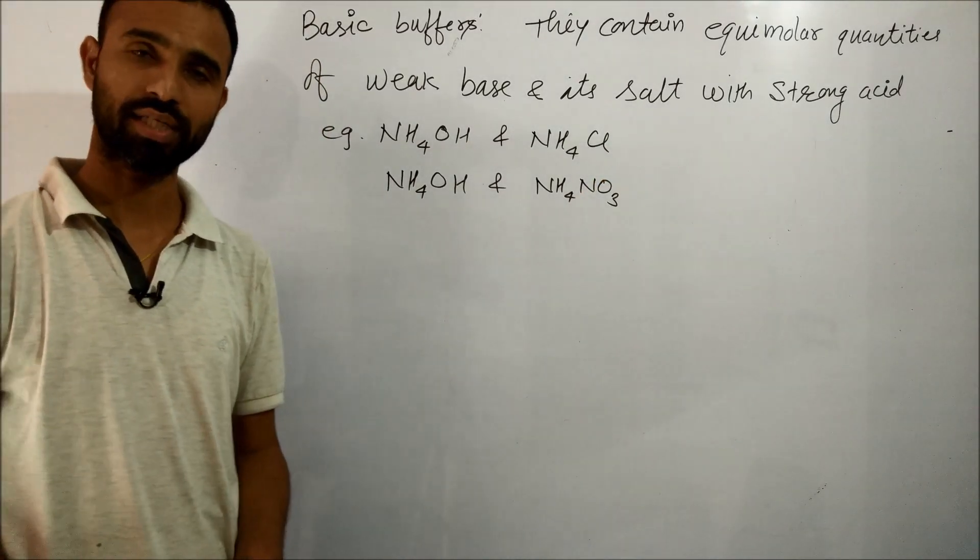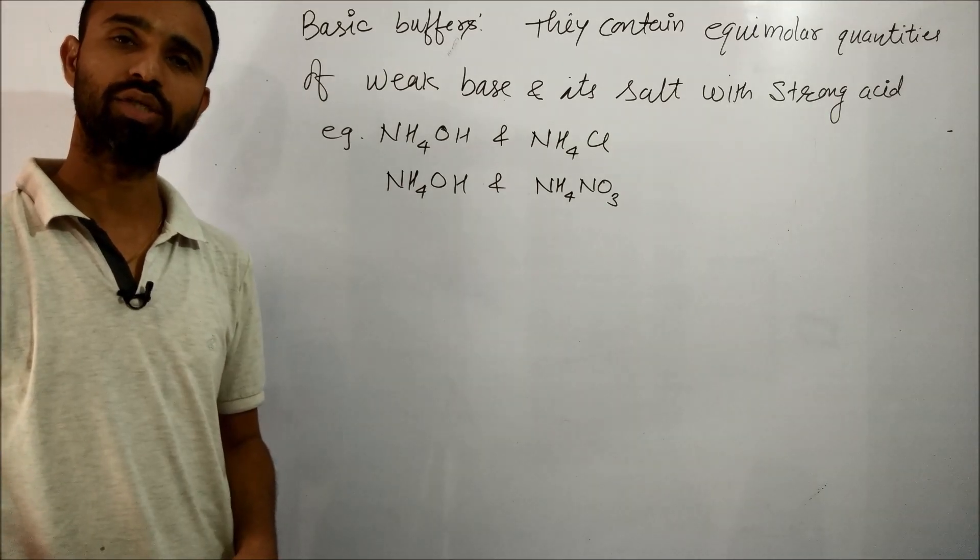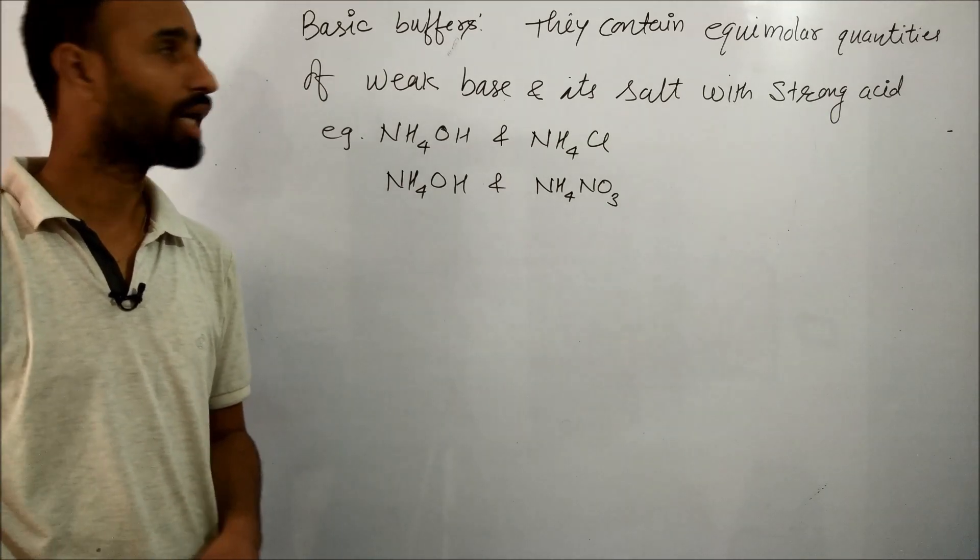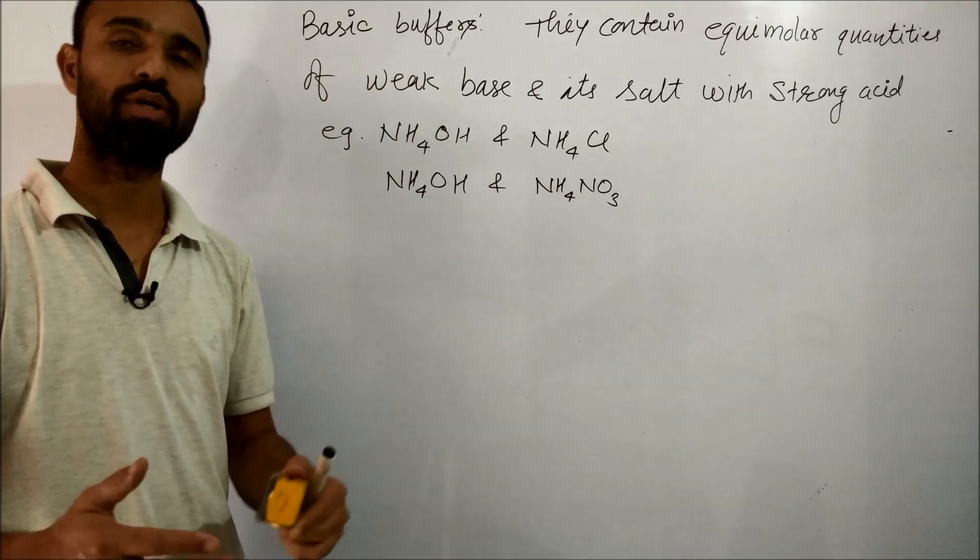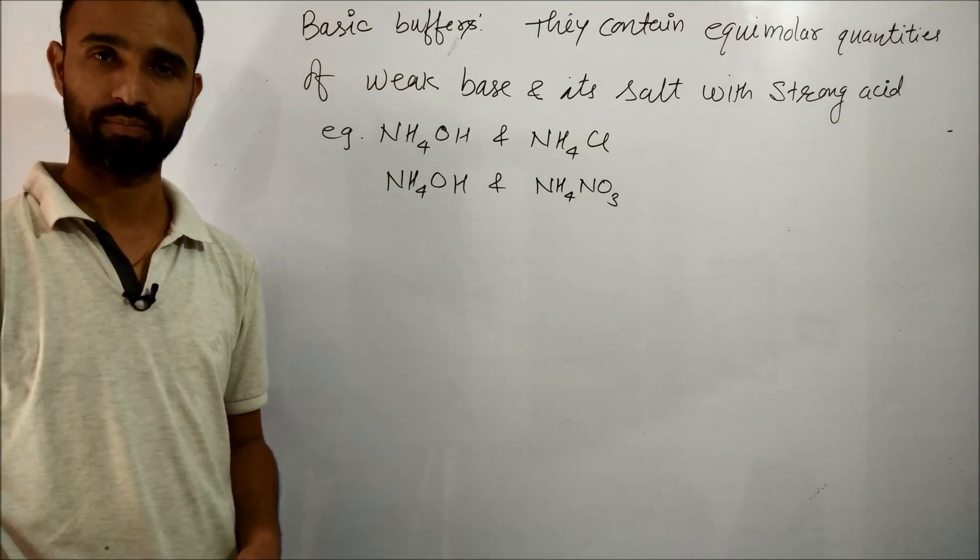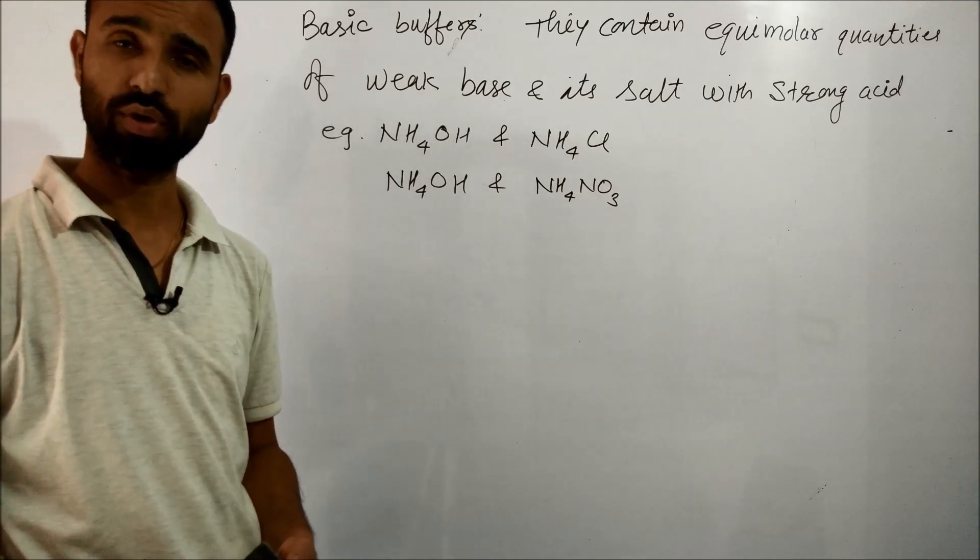So these are types of Acidic Buffers and Basic Buffers. In Acidic Buffers, pH ranges from 4 to 7, and for Basic Buffers, pH ranges from 7 to 10.